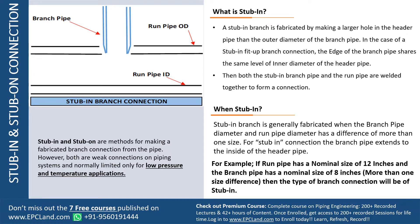We go for stub-in type connections when the branch size diameter and the run pipe diameter have a difference of more than one size. For example, if we have a run pipe with a diameter of 12 inch and the branch size has a diameter of 8 inch — which is more than one size difference — then we go for this kind of stub-in connection.